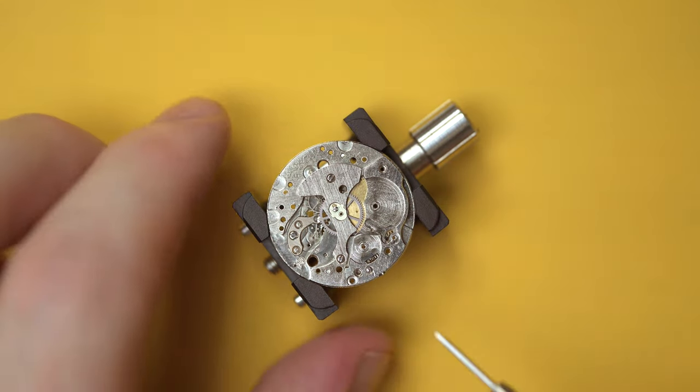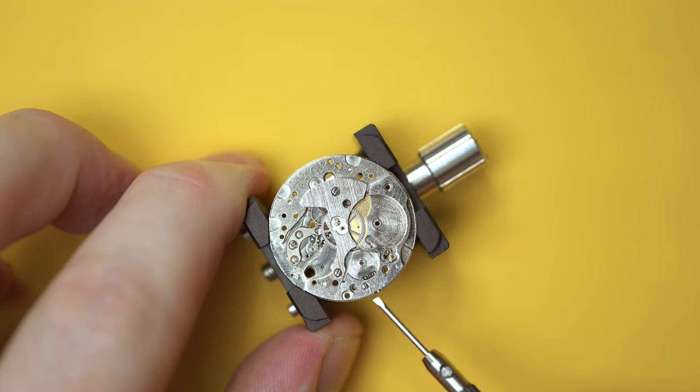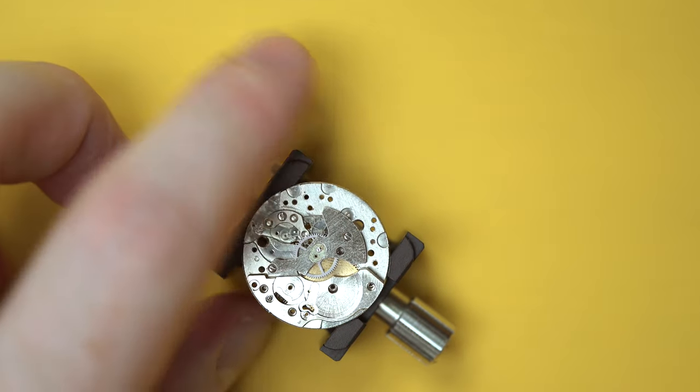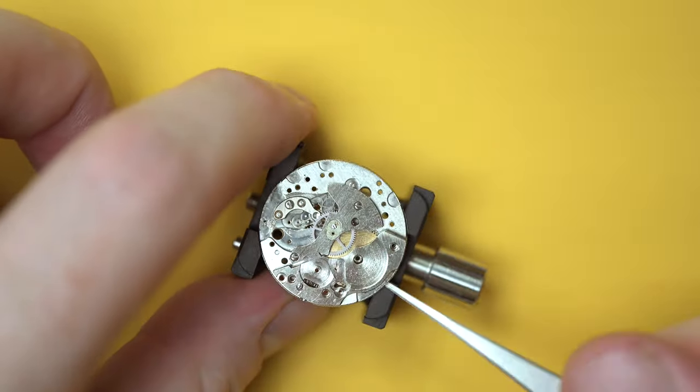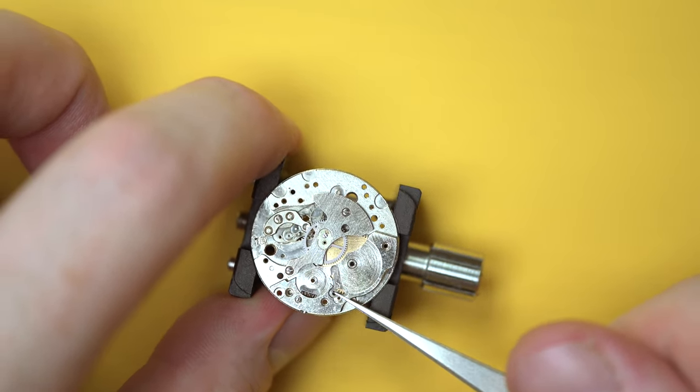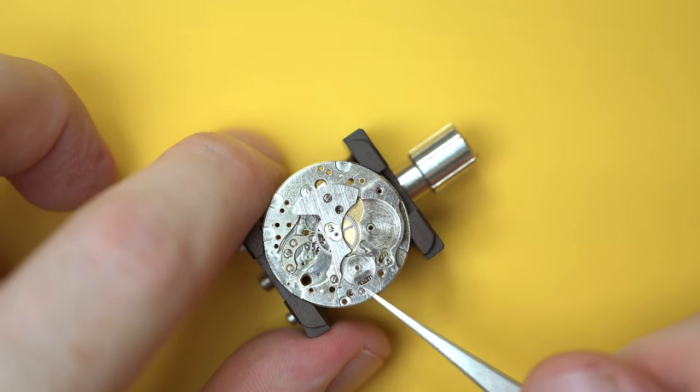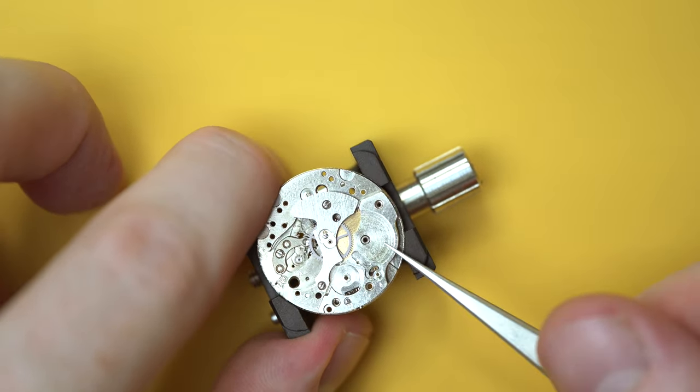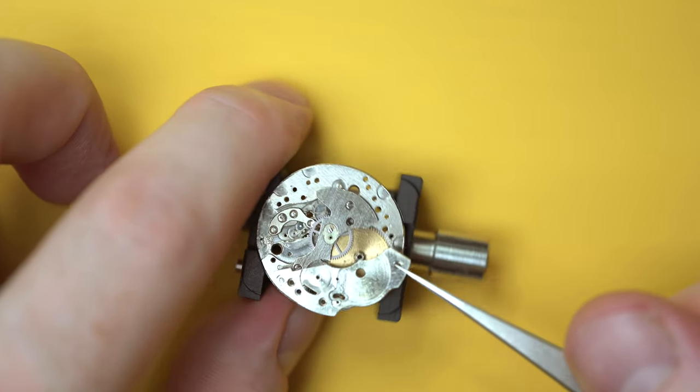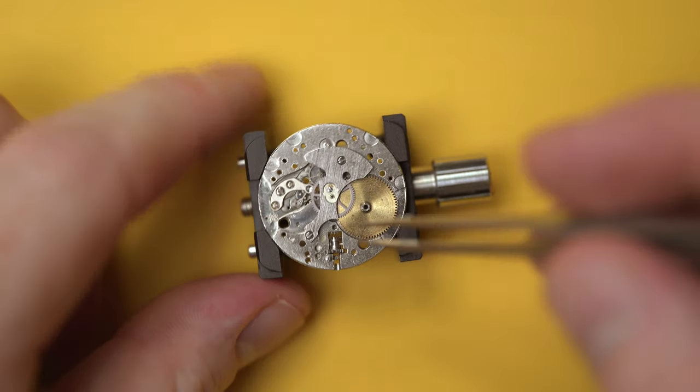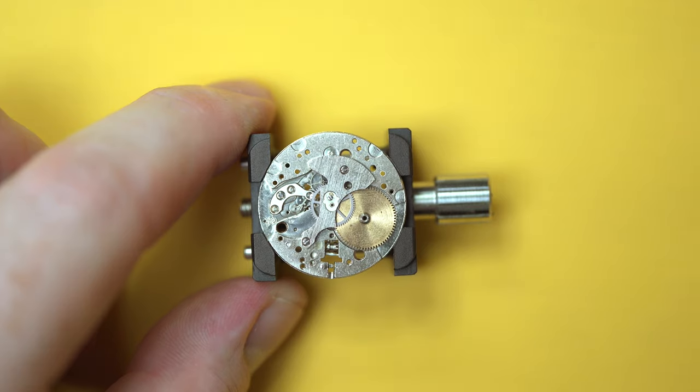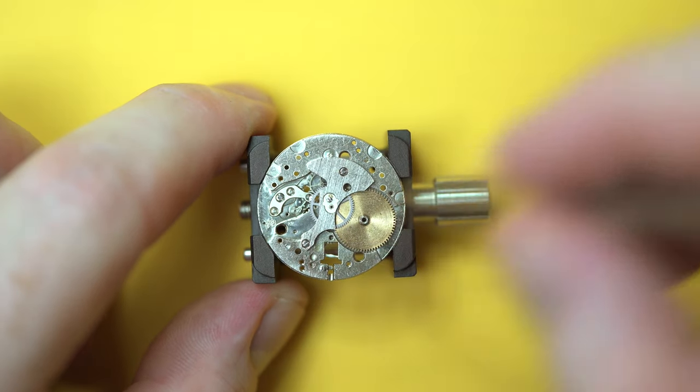I'll unscrew these two screws and then we can take this barrel bridge off and see the main barrel underneath. Now the two screws are out. You will see I'm using a screwdriver here just to lever the bridge up, just to make it a bit easier to remove actually. And then I'll use the tweezers to pick it up and set it aside. This one's been a bit fiddly. It's been a bit more tricky than I would expect. But let's give it a few more wiggles. And there we go. It comes off in the end. So underneath you can see the brass looking wheel there. That's the main barrel. That's the one that holds the mainspring.